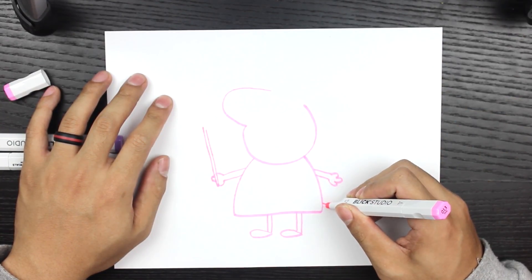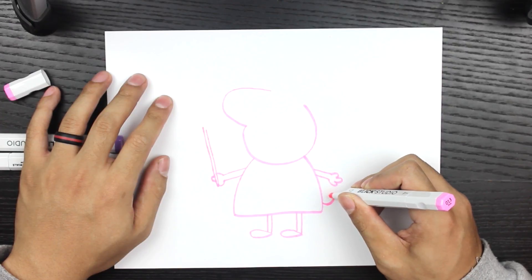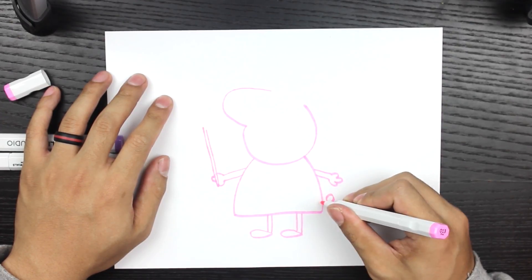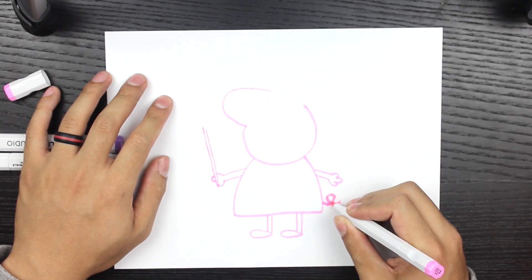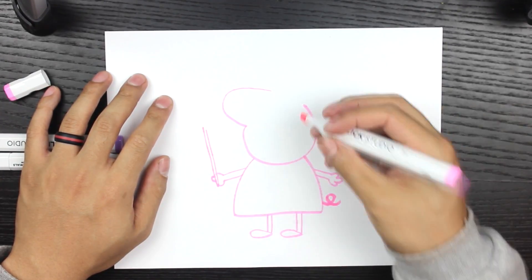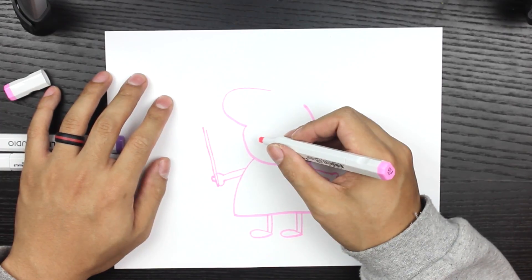Alright, so we're going to create the tail with the thickness of the chisel tip. And then we go back over it once more just to fix the thickness of it.